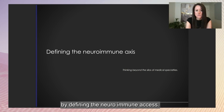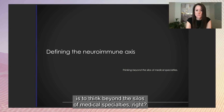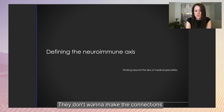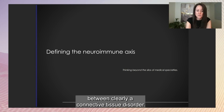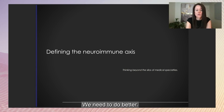I'm going to start today by defining the neuroimmune axis. What I want to encourage everybody to do is to think beyond the silos of medical specialties. A lot of you have seen different specialists who don't want to make the connections between — clearly — a connective tissue disorder, which is really a complex medical problem that affects all body systems. We need to do better.